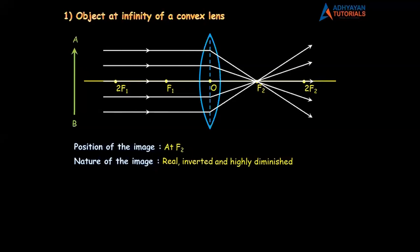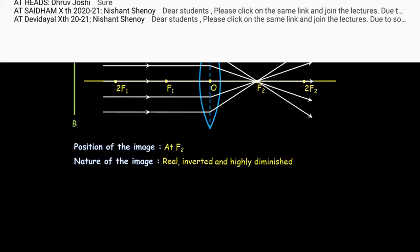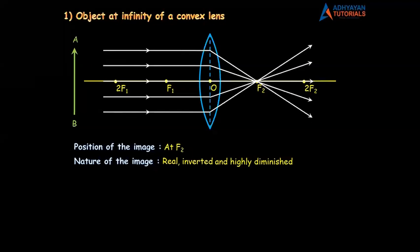We can see the mark here. Write the question at the top: serial number one, object at infinity of a convex lens. And write the things below the diagram — position of the image: at F2. Nature of the image: real, inverted, and highly diminished.